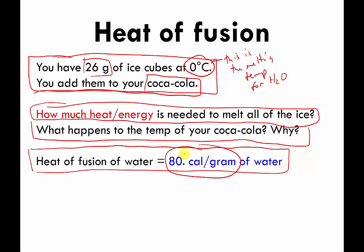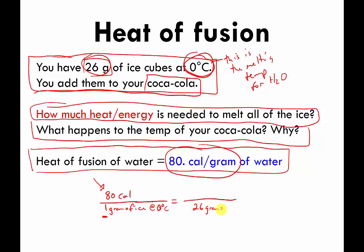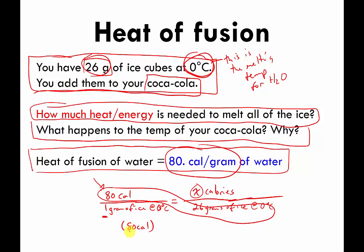To solve this, I'll write it as a fraction: 80 calories is how much energy I need to melt one gram of ice at zero degrees Celsius. But we don't have one gram — we have 26 grams. So I'll make an equal fraction: 80 calories over 1 gram equals x calories over 26 grams of ice at zero degrees Celsius. To solve for x, cross-multiply: 80 calories times 26 grams equals 1 gram times x calories.